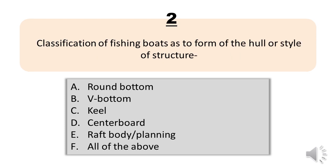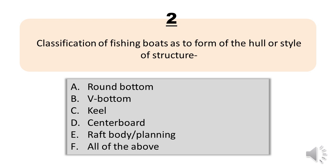Number 2. Classification of fishing boats as to form of the hull or style of structure. A. Round bottom. B. V bottom. C. Keel. D. Centerboard. E. Raft body or planing. F. All of the above. The correct answer is Letter F. All of the above.